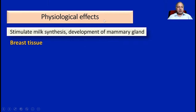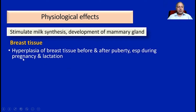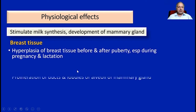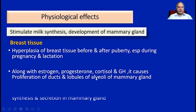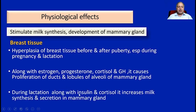The main physiological effect of prolactin hormone is that it stimulates milk synthesis. It also causes development of the mammary gland, causing hyperplasia of the breast tissue before and after puberty, and further especially during pregnancy and the lactational period. Along with other sex hormones like estrogen, progesterone, cortisol, and growth hormone, it causes proliferation of the ducts and lobules of the alveoli of the mammary gland. During lactation, along with insulin and cortisol, it increases milk synthesis and secretion.